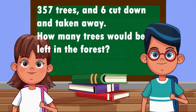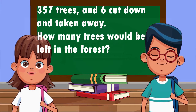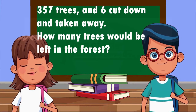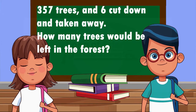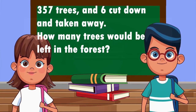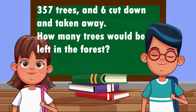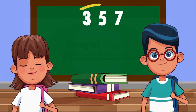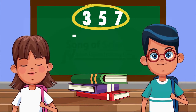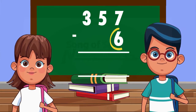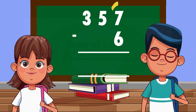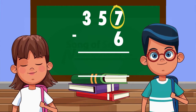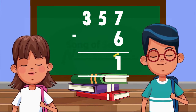We are now going to subtract one-digit numbers from three-digit numbers. Let us say there were 357 trees in the forest. How many trees would be left in the forest? We organize our work like this: 357 minus six. We start with ones. 7 minus six equals one.